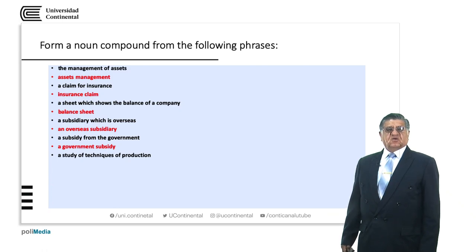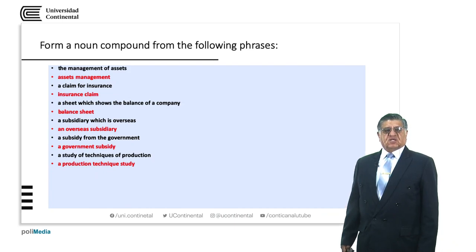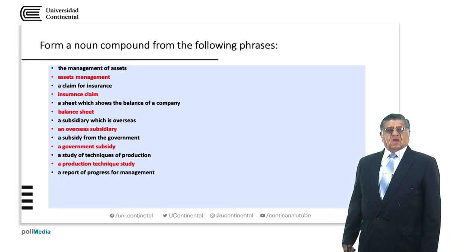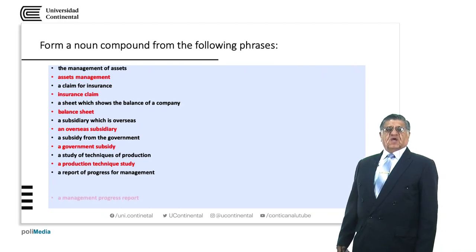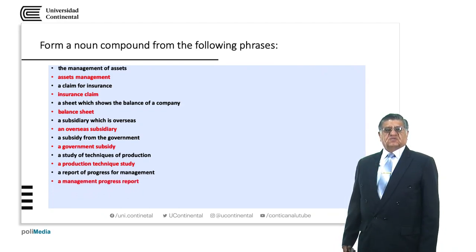A study of techniques of production — again, we are talking about a study that is based on techniques of production: 'a production technique study'. To pluralize, we just pluralize the final word: 'production technique studies'. A report of progress for management — what are we talking about? About management, about the progress, or about the report? We are talking about the report. So we have 'a management progress report'.